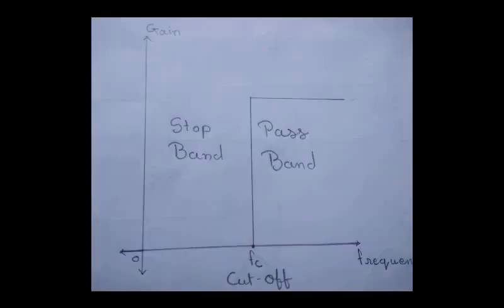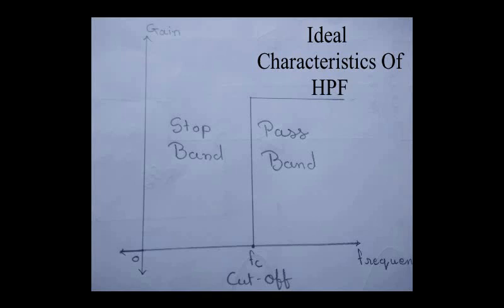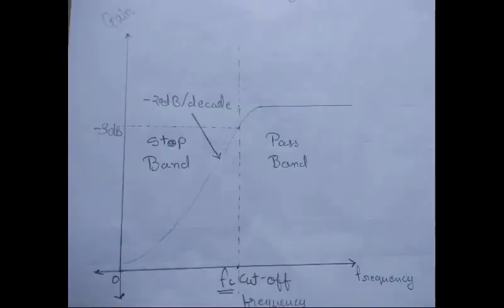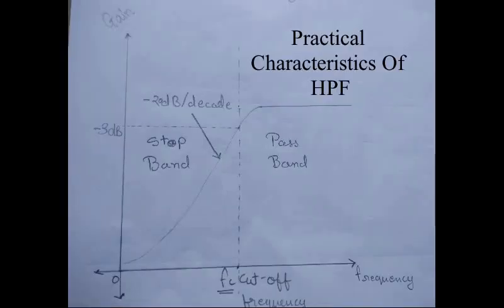The diagram shows the ideal output of the high pass filter. This is also not possible to be achieved. The practical output of high pass filter is shown. From this we can see that the frequencies above the cutoff frequency fc are allowed to pass through the band and are also known as pass band, while which are attenuated are known as stop band.